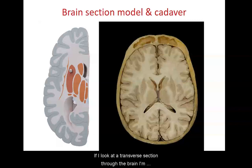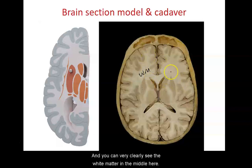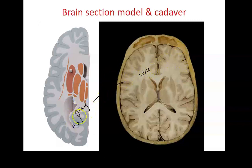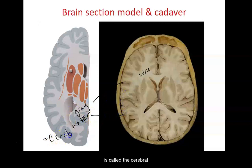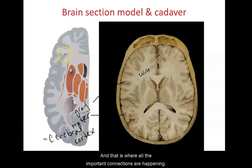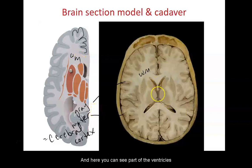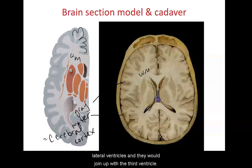Looking at a transverse section through the brain, you can very clearly see white matter in the middle and a darker layer around the outside where all the connections between neurons are happening — that is gray matter. All of the gray matter of the cerebrum is called the cerebral cortex, and that is where all the important connections are happening. You can also see parts of the lateral ventricles under each hemisphere, which join up with the third ventricle.